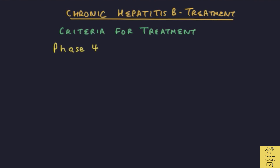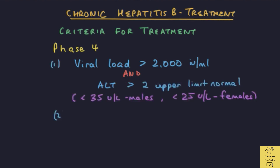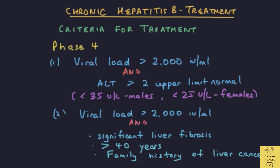Let's now look at the criteria for treatment for phase 4 patients. Treatment is given if the viral load is more than 2,000 IU per ml and the liver enzyme ALT is more than twice the upper limit of normal. Another criterion is if the viral load is more than 2,000 IU per ml and there is significant liver fibrosis, the patient is above the age of 40, or has a family history of liver cancer — in which case treatment may be considered even if the liver enzyme levels are normal.